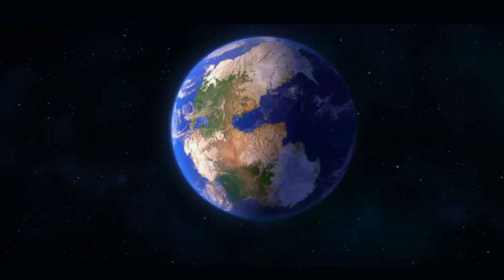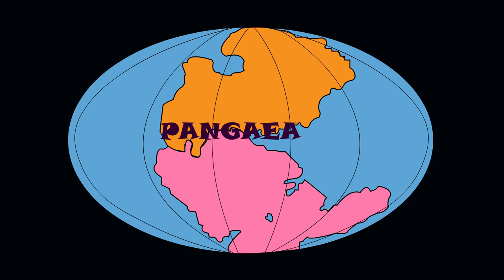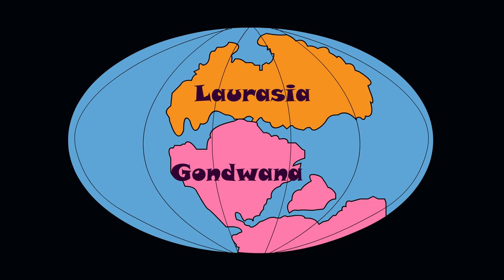Many years ago there was only one big continent called Pangaea. This mainland consisted of all continents that we know today. With the movement of tectonic plates, the continents began to diverge from each other.